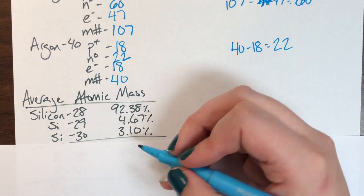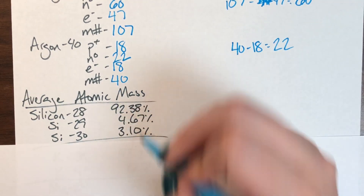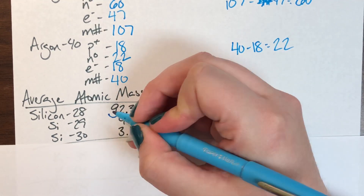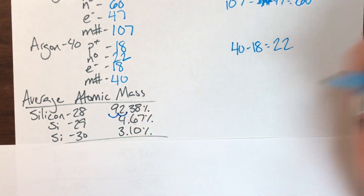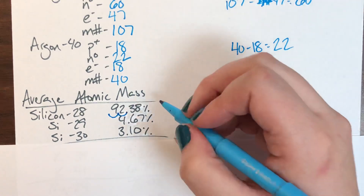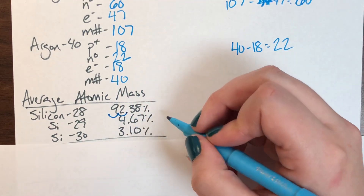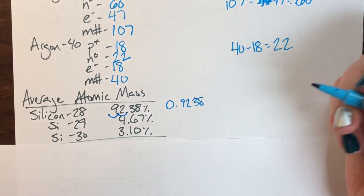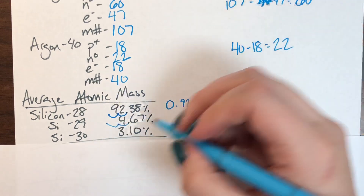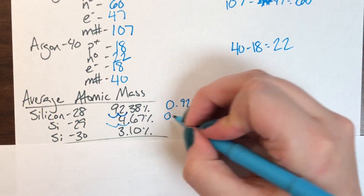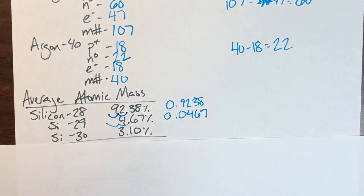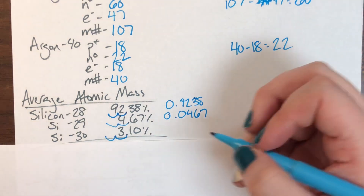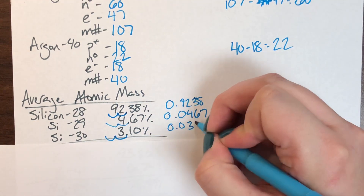Step one is always to convert the percent to a decimal, either by moving the decimal two places to the left or by dividing by 100. So 92.38% becomes 0.9238, 4.67% becomes 0.0467, and 3.10% becomes 0.0310.